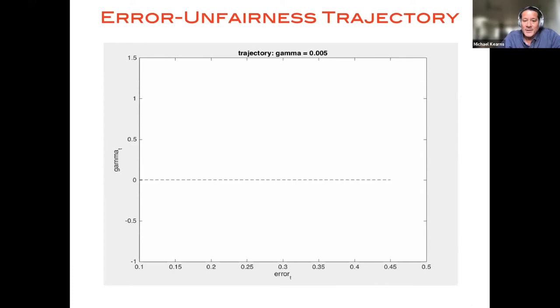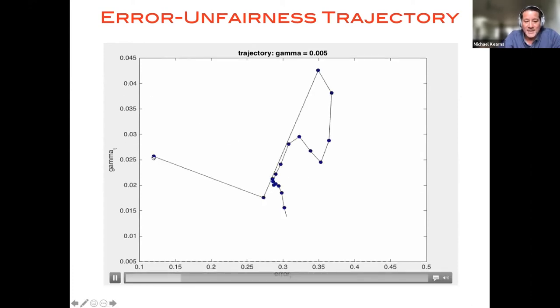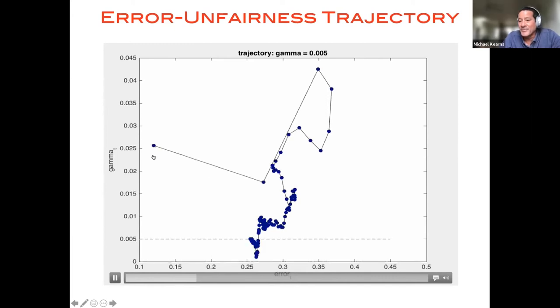And the dashed line, which is actually something like 0.005 or something, the dashed line basically indicates the upper bound on the fairness unfairness violation that we're allowing in the constrained optimization problem. Okay, so let me start this little movie. Okay, so you know.